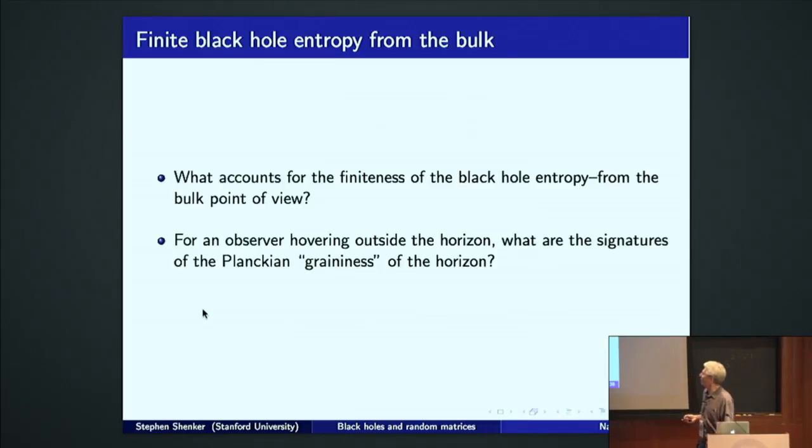Slightly more specifically, for an observer, a bulk observer, hovering above the horizon, outside the horizon, watching it, what are the signatures, as this person watches the horizon, of the Planckian graininess of the horizon? We think there should be some, but we don't know what it is or why it's there.